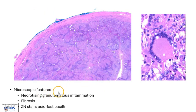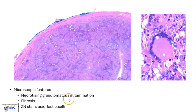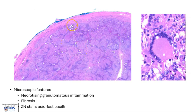Microscopically, there is necrotizing granulomatous inflammation and sometimes also accompanying fibrosis. The Ziehl-Neelsen stain would reveal the presence of acid-fast bacilli. Here we can see the epididymis, which is mostly replaced by these rounded structures representing epithelioid granulomas, with still a little bit of residual viable epididymal parenchyma in between.